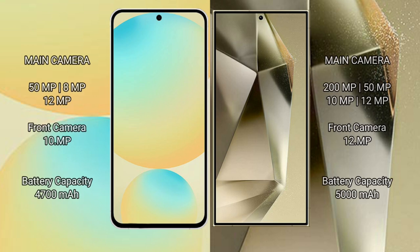Samsung Galaxy S24 FE features a triple rear camera setup: 50MP, 8MP, and 12MP, with a 12MP front camera. Samsung Galaxy S24 Ultra features a quad rear camera setup: 200MP, 50MP, 10MP, and 12MP, with a 12MP front camera.